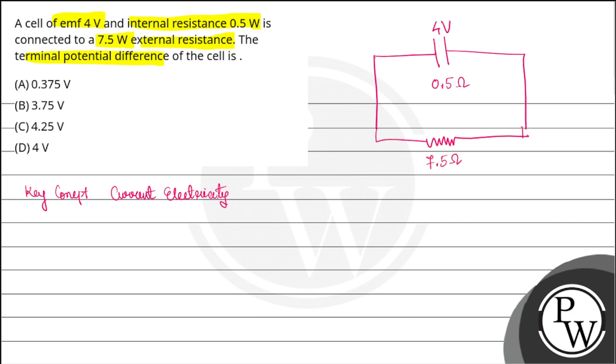Current will be I = EMF divided by total resistance, where R_total = 7.5 + 0.5 = 8 ohms in series. So I = 4/8 = 0.5 amperes.